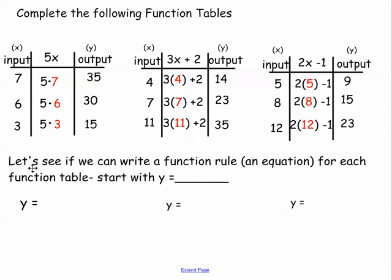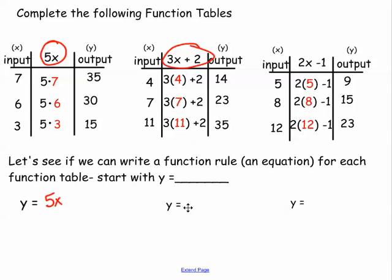Let's see if we can write a function rule or an equation for each of the function tables. Your equation will always start with y equals. The function rule or the equation is always what are you doing to your x value. So y equals 5x. y equals 3x plus 2. Your function rule or your equation is always what you're doing to your x value. Right here: 2x minus 1.